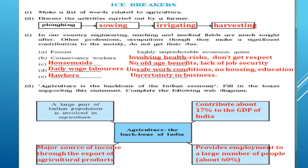The next question is: discuss the activities carried out by a farmer. In reality, farmers' activities go on 24 by 7, 365 days. We are going to discuss a few activities carried out by the farmer — for example, logging, sowing, irrigating, or harvesting.